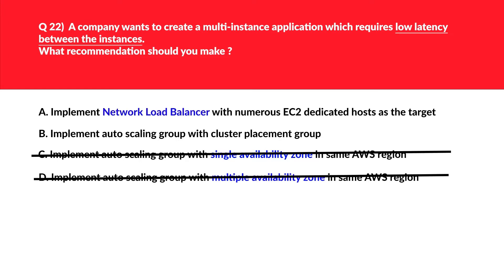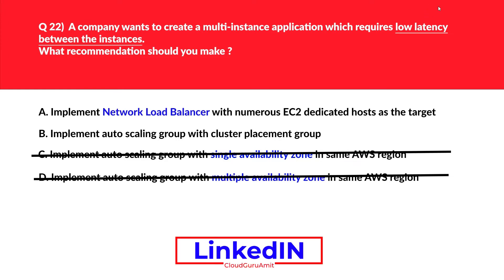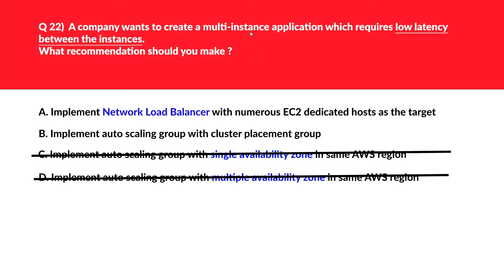Let's now look at option A. Though a Network Load Balancer can achieve low latency, the problem is there is no mention of TCP or UDP traffic in the question. We simply can't assume TCP or UDP traffic, since Network Load Balancer works on those protocols. Hence this is again an incorrect choice. Quick tip for the exam: if you want to achieve low latency or support HPC workloads, cluster placement group should come to mind. Hence we'll lock B as the correct answer.